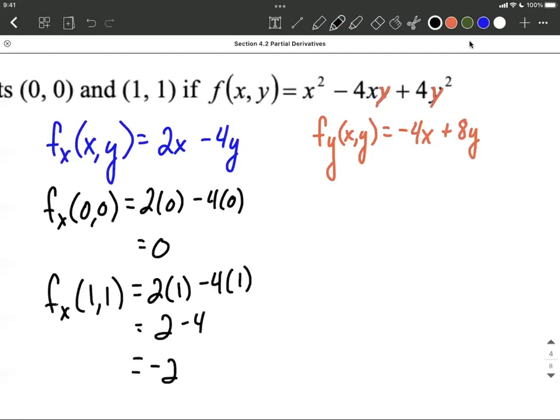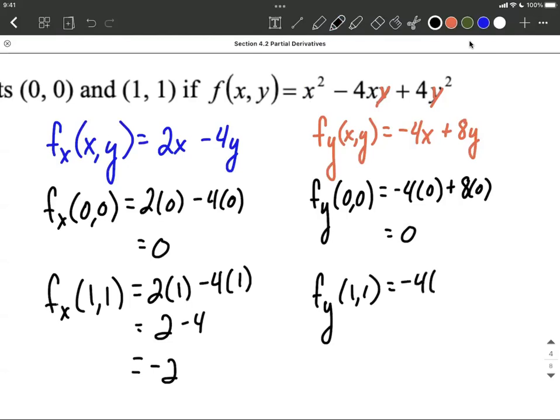And we'll do the same thing over here, the partial with respect to y of (0,0). You replace each of the x and the y with 0 here. So that works out to be 0. And the partial with respect to y of (1,1). In this case, it's going to be negative 4 times 1 plus 8 times 1. So negative 4 plus 8 works out to be positive 4.